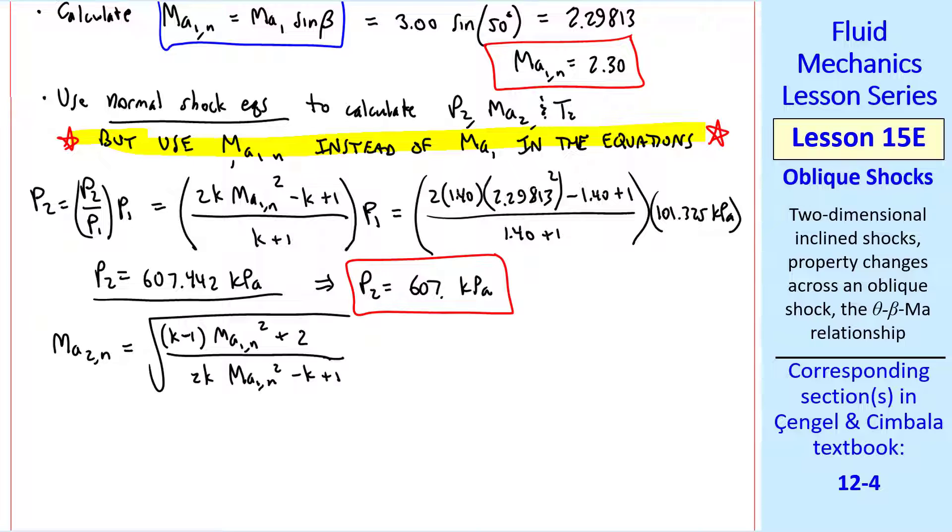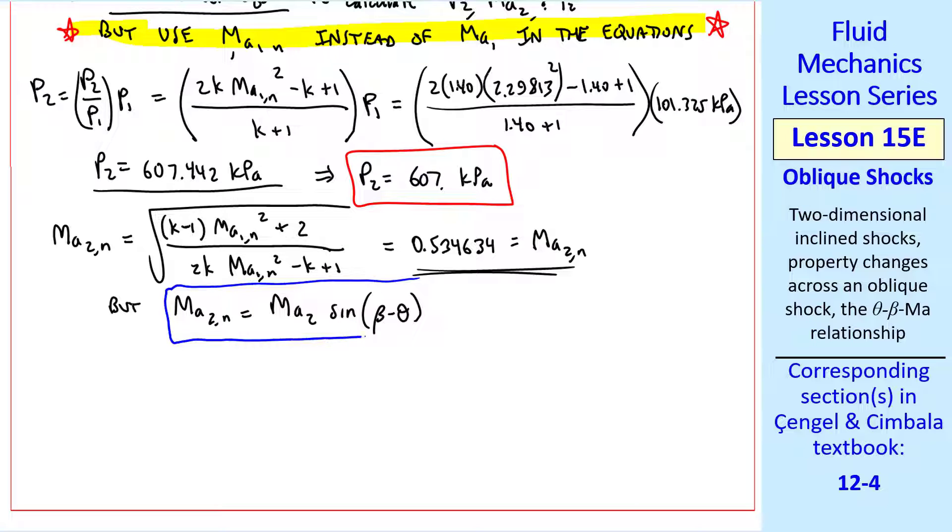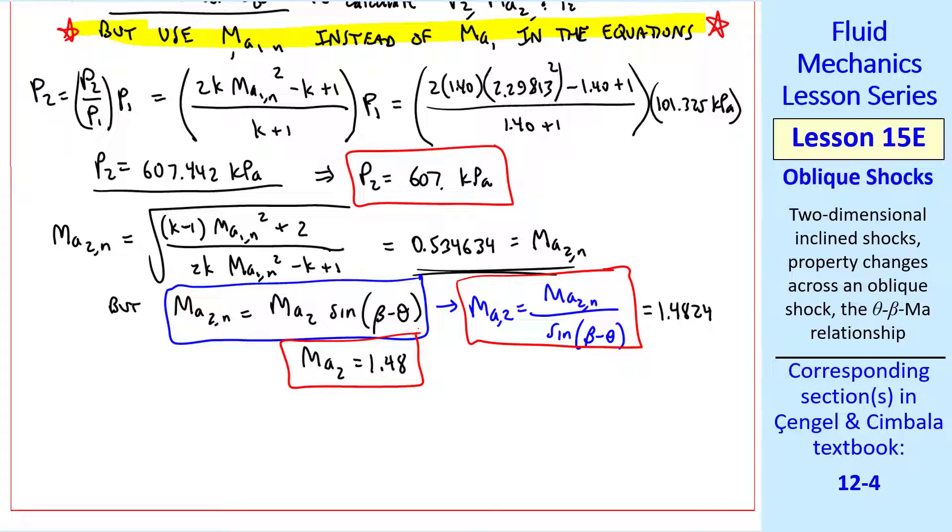Again, from our normal shock equations, we had this equation for the Mach number after the shock. But again, we used the normal components for both MA2 and MA1. I get this value to six digits. But recall that MA2N is MA2 times sine beta minus theta. So MA2 is MA2N over sine beta minus theta. We use this value, and we know beta and theta. When I plug in the numbers, I get Mach number 2 is 1.48, which is supersonic.